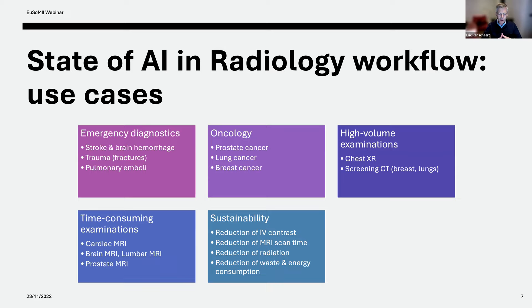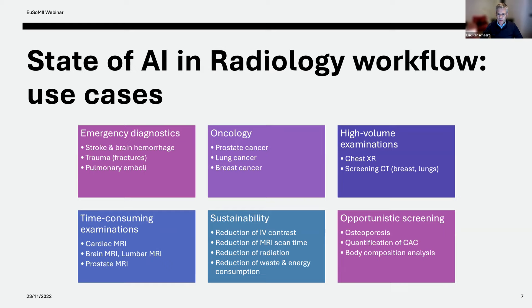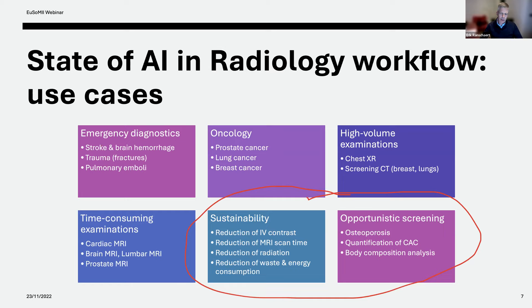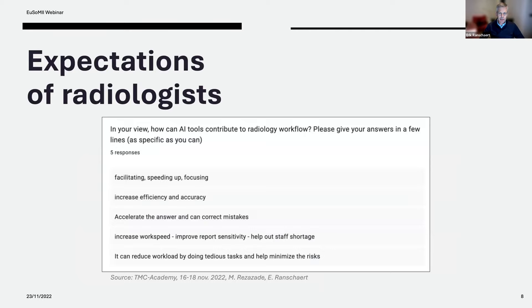Several more use cases fall under the group of sustainability: applications that allow us to reduce intravenous contrast injection, reduce scan times with MRI, reduce radiation with scans, and help reduce waste and energy consumption by saving scan time. Another group — more future-oriented — is opportunistic screening, meaning that in routine examinations all kinds of measurements can be performed, such as bone density measurement in CT scans, quantification of coronary calcifications in routine chest CTs, or entire body composition analysis.